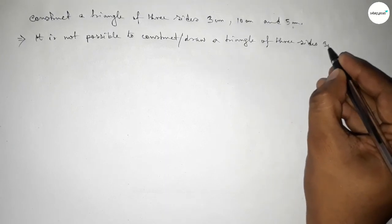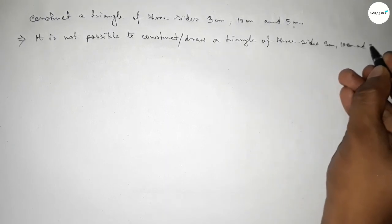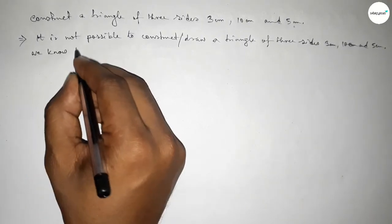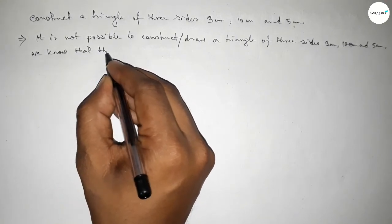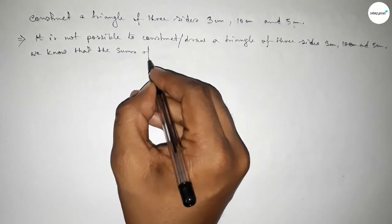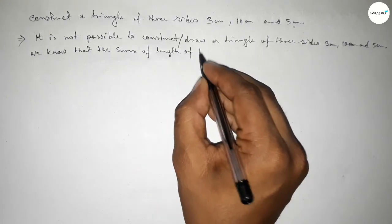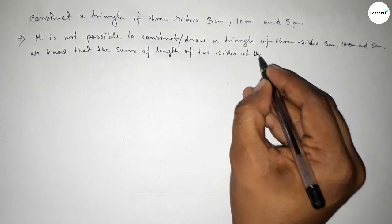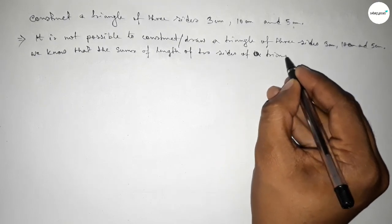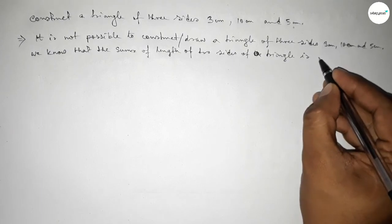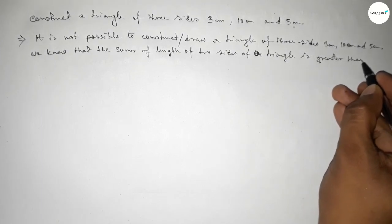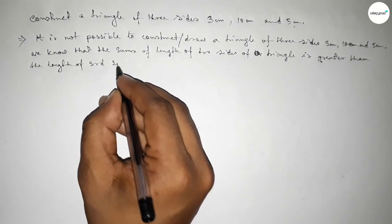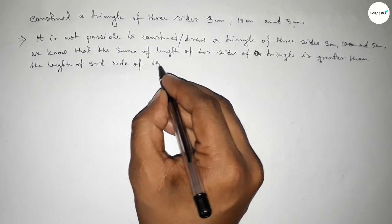We cannot construct a triangle with these three sides because of the condition to draw a triangle. The condition is: the sum of the lengths of two sides of a triangle is always greater than the length of the third side.